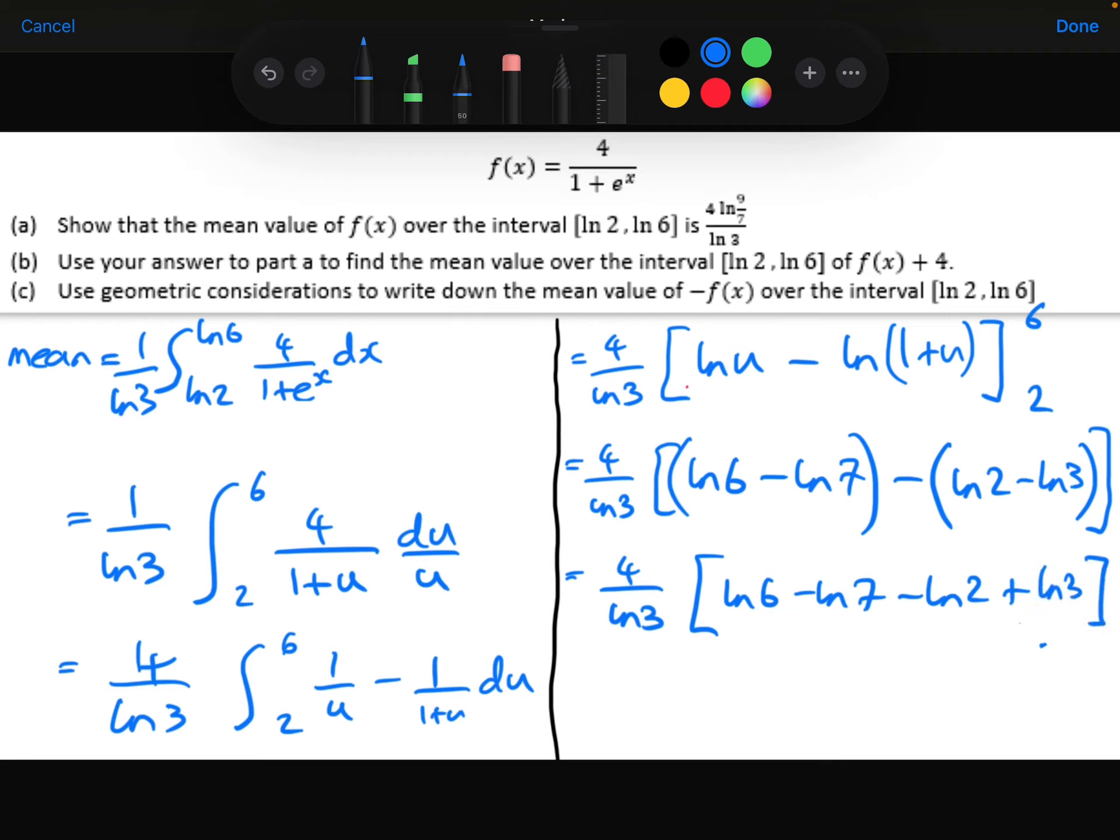So ln 6 minus ln 7 minus ln 2 plus ln 3. Because the minus minus, that's why it's become a plus ln 3. So using the laws of logarithms, I've got a plus ln 6 and a plus ln 3. So adding logarithms together means that I can multiply the insides. So that's going to give me ln 18. And then I've got a minus ln 7 and a minus ln 2, which would combine together to be ln 14. The 18 over 14 will simplify to be 9 over 7. So we get left with 4 ln 9 over 7, all over ln 3, which was what we needed to show.